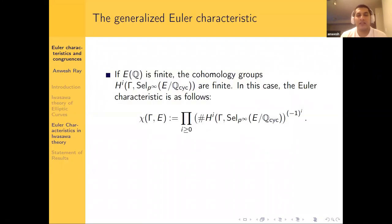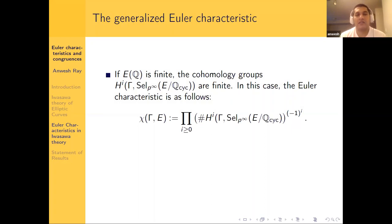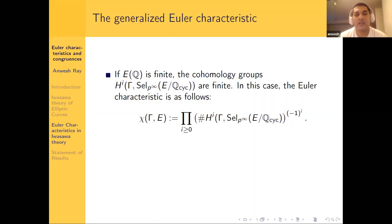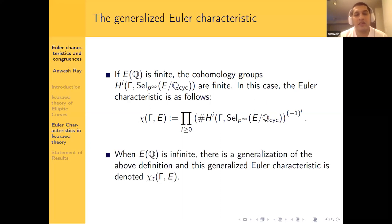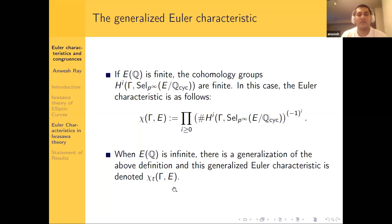Now we introduce the main object of study: the generalized Euler characteristic. When E(Q) is finite — i.e., when E has rank zero — the cohomology groups of Γ acting on these Selmer groups are all finite, and the Euler characteristic is just the alternating product of their orders. When E has positive rank over Q, these cohomology groups are no longer finite, so this formula does not make sense and we have to take a derived version, called the generalized Euler characteristic.